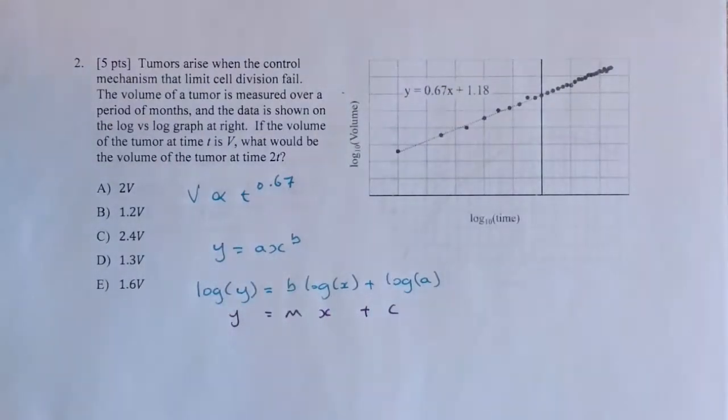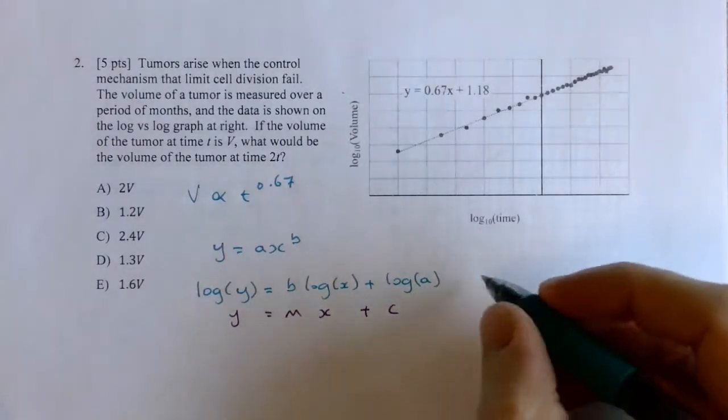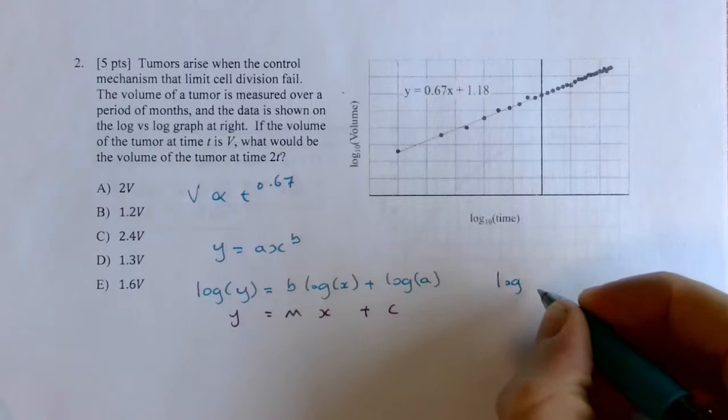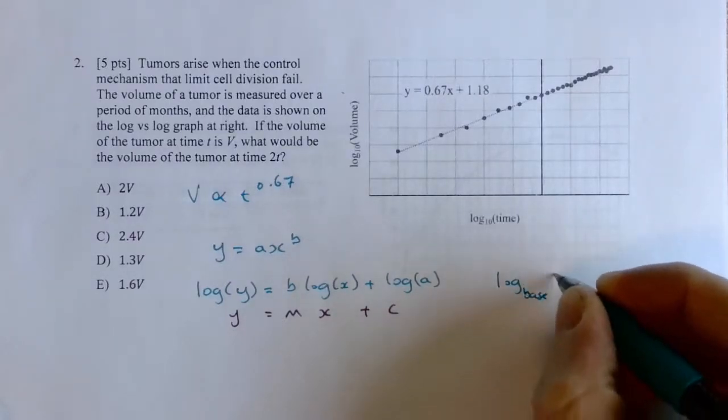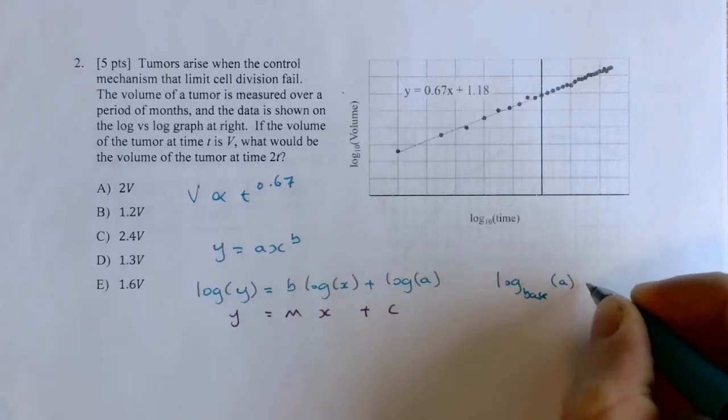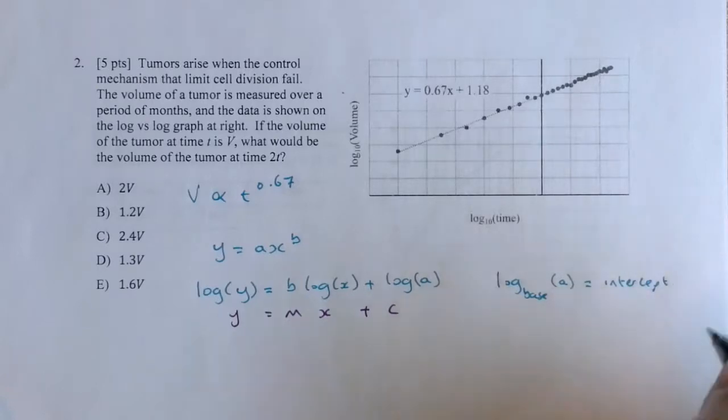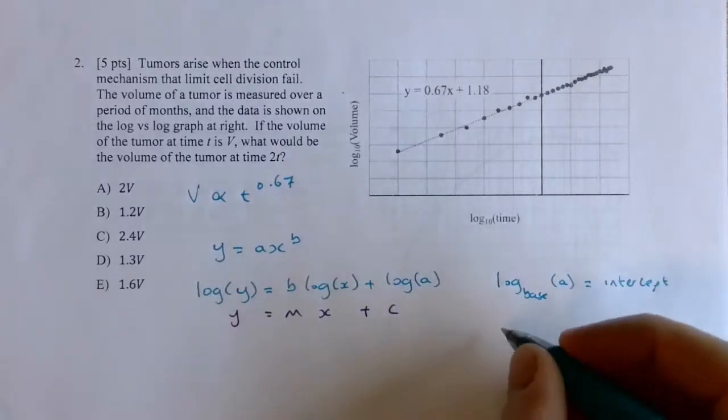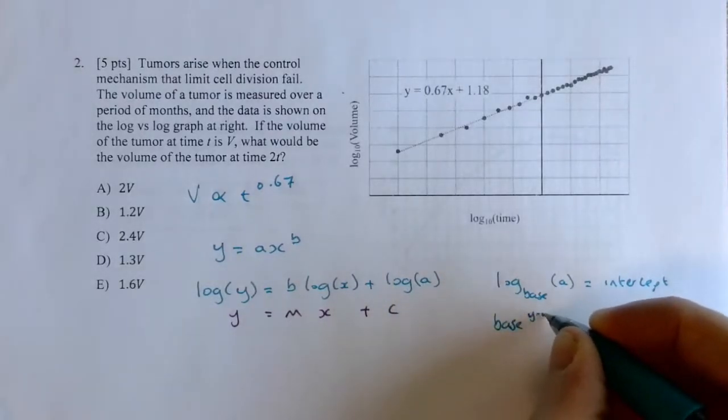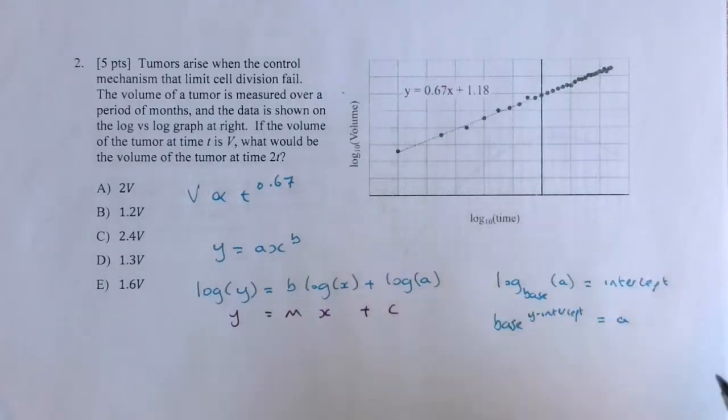But if we want to do plenty more detail, so what we can write here, and then we also know that the log of a to some base, in this case the base is 10, but the log of a is going to be equal to the intercept value, y-intercept value, on this axis, or c here is referring to the intercept. So the base raised to the power of the y-intercept will be equal to a.